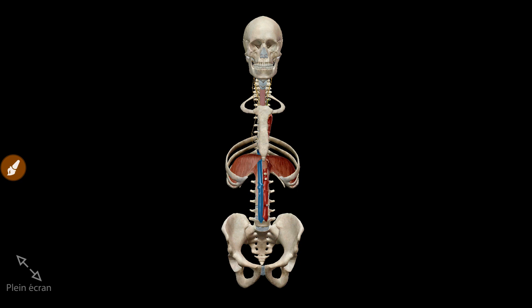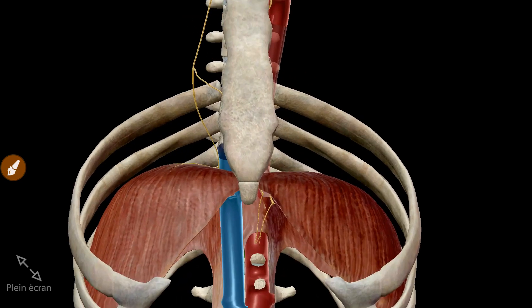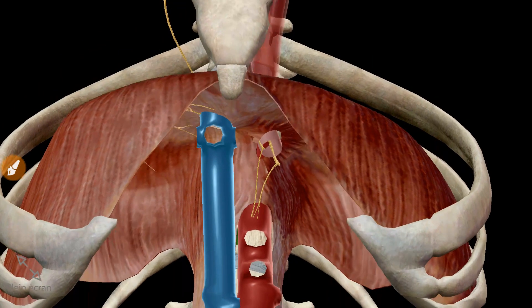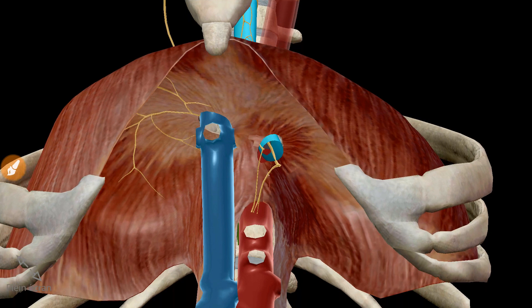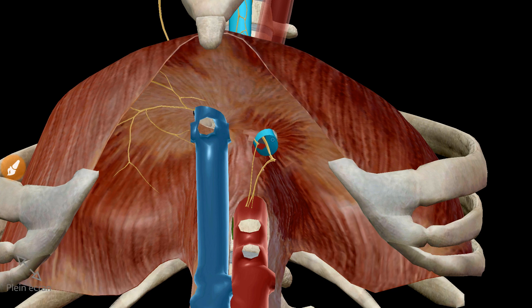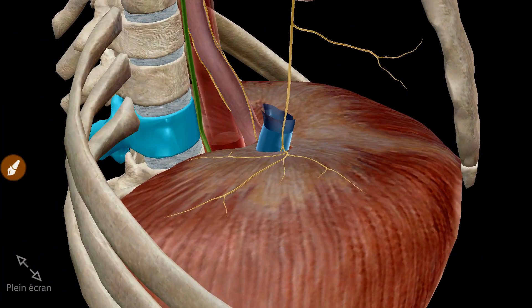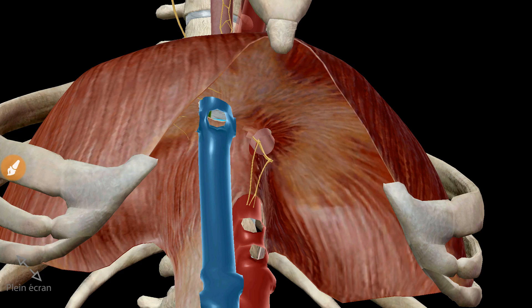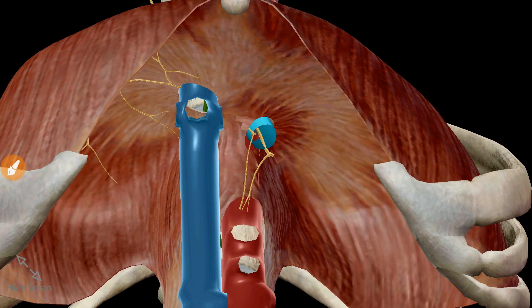Now let's describe the esophageal hiatus. This is the esophageal hiatus. It is a muscular, elliptic, and extensible opening of the diaphragm. It is located at the level of the 10th thoracic vertebrae, anterior and superior to, and a little bit to the left of, the aortic hiatus.